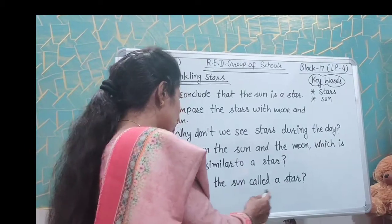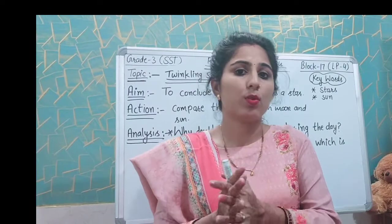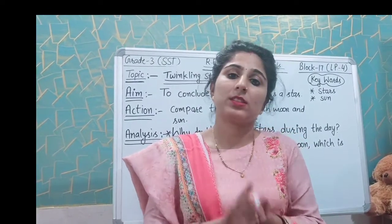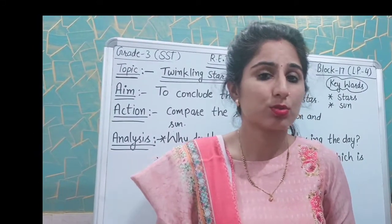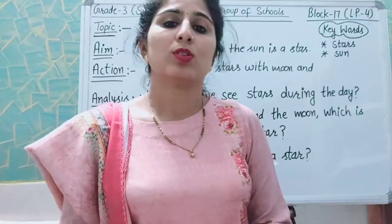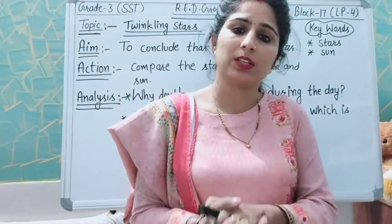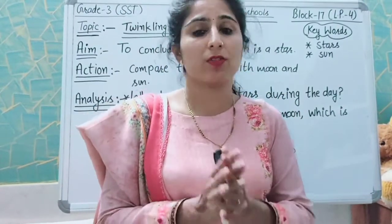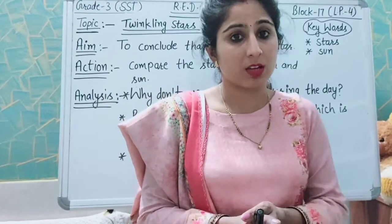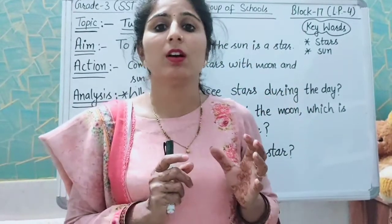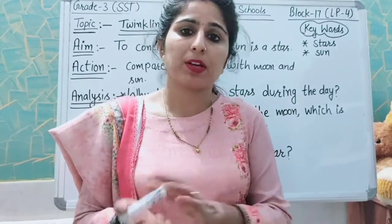Why is the sun called a star? The sun is made up of very hot gases, and these gases burn to produce heat and light. Similarly, stars are also made up of hot gases. Both the sun and stars have their own heat and light, are round in shape, and are far away from the earth. That is why the sun is also called a star. Stars are very far away from the earth, which is why they appear smaller compared to the sun.